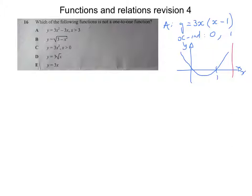We have a restricted domain from x greater than 3 upwards, so we're looking at this section of the graph which just continues upward. Every x value only has one y value and every y value only has one x value, so A is a one-to-one function. If the domain had been restricted to something like x greater than 0, then you would have a section that is not one-to-one, but with x greater than 3 it's fine.